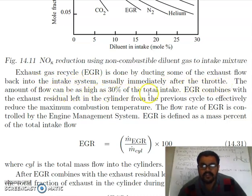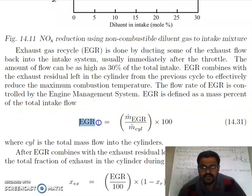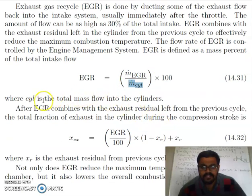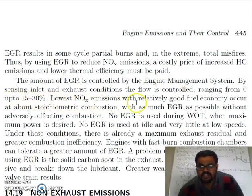The amount of EGR flow can be as high as 30% of the total intake. EGR combines with the exhaust residue left in the cylinder from the previous cycle to effectively reduce the maximum combustion temperature. The flow rate is controlled by the engine management system. The EGR percentage equals the mass of exhaust gas recirculated divided by the total mass in the cylinder. By sensing inlet air and exhaust conditions, the flow is controlled ranging from 0 up to 30–50%. Lowest NOx emissions with relatively good fuel economy occur at about stoichiometric combustion with as much EGR as possible without adversely affecting combustion.